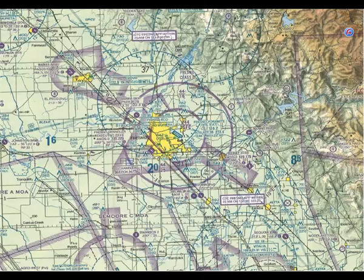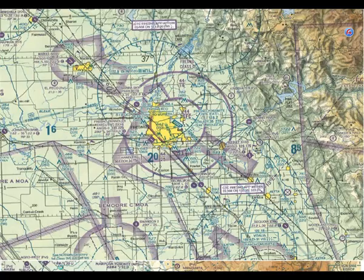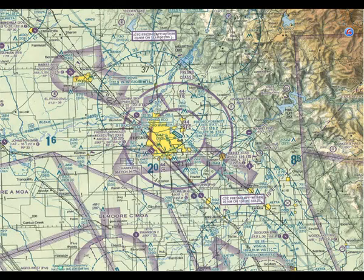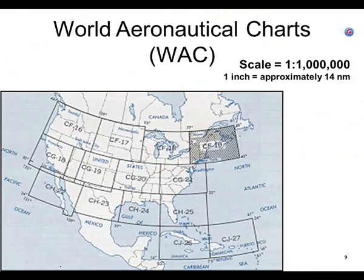Here's the Fresno Air Terminal — there's Class C airspace with two magenta rings around it. But if I take a picture of a WAC chart, everything is half the size — it shrunk. The scale of World Aeronautical Charts, or WAC charts, is one to one million.